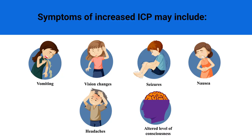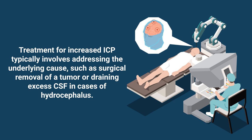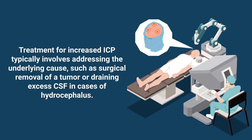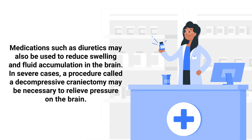The treatment for increased intracranial pressure typically involves addressing the underlying cause, such as surgical removal of a tumor or draining excess cerebrospinal fluid in cases of hydrocephalus. Medications such as diuretics may also be used to reduce swelling and fluid accumulation in the brain.